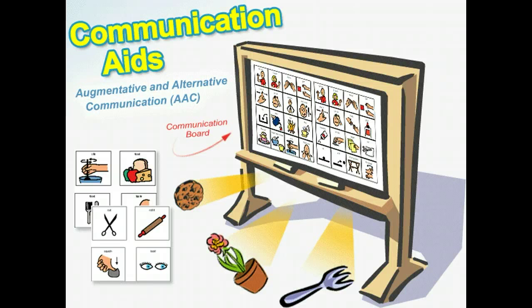The first category is communication aids. These are devices that can help individuals with speech or writing difficulties communicate their needs, feelings, and ideas. Augmentative and alternative communication (AAC) products fall under this category. Examples range from simple, such as low-tech communication boards, to complex, such as speech synthesizers and word prediction software.